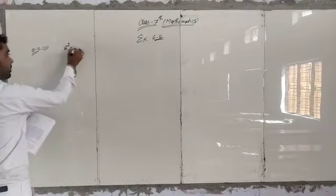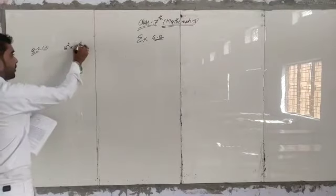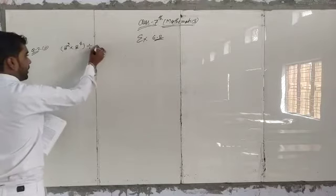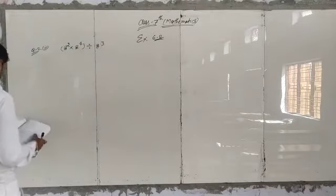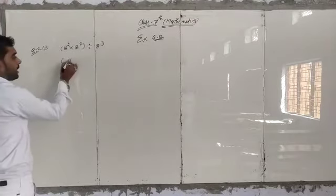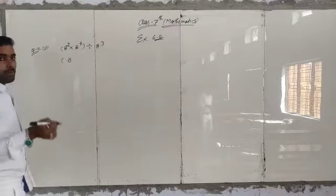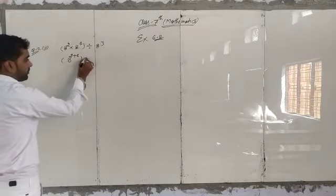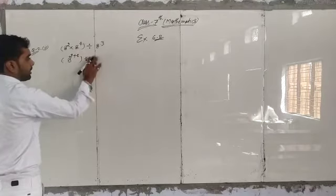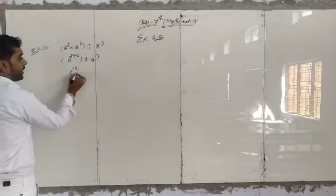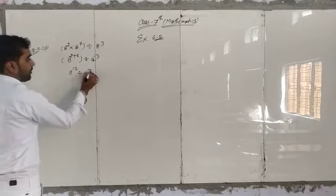8k power 2 into 8k power 4, divided by 8k power 3, into 8k power 2, divided by 8k power 3. The base is the same, so we multiply the powers: 2 plus 4, divided by 2, gives 8k power 12, divided by 8k power 3.